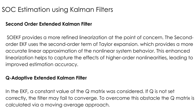Coming to the second order extended Kalman filter: in the standard EKF, the system was linearized using the Taylor series expansion, considering only the first term. But the second order EKF uses the second term as well. Hence, by using the second term, a better linear approximation is considered, and hence a better state estimate is produced.